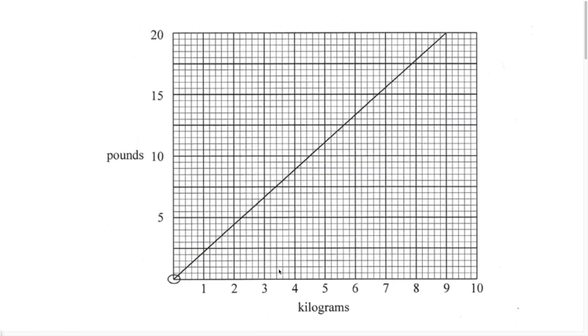Before we look at part A, the first thing I want us to notice is that they don't give us every point on this graph. When I say it doesn't give us every point, I mean we don't know the scale of the graph. We know we start at zero and the next number we see is five, but there are many lines in between. Because we don't know what these numbers are, it's very important that we find the scale of this graph.